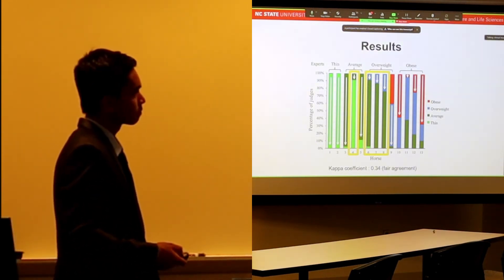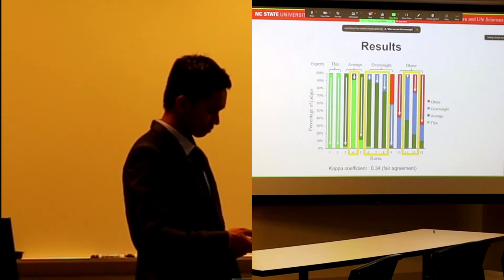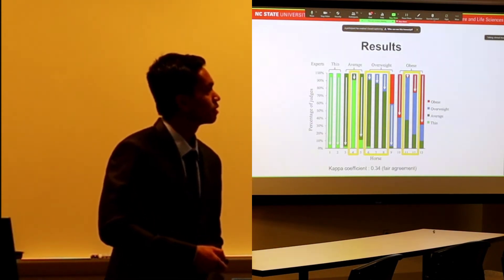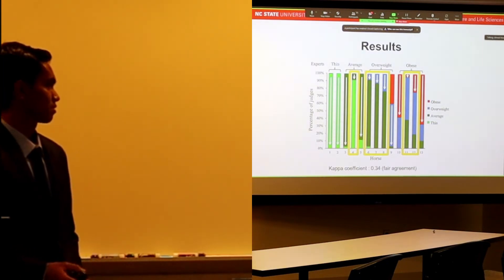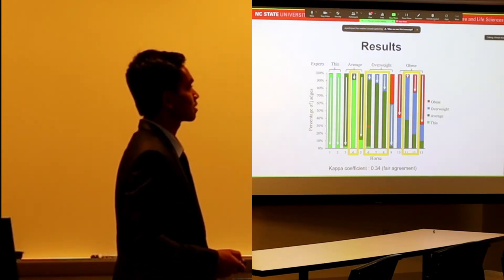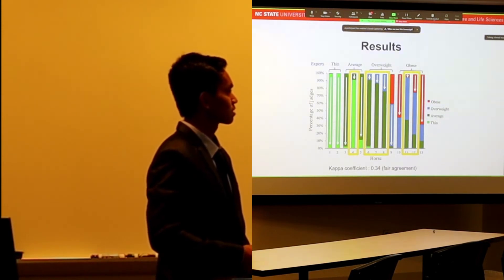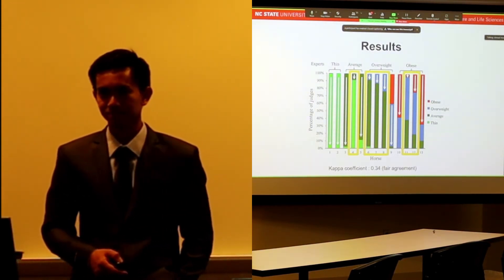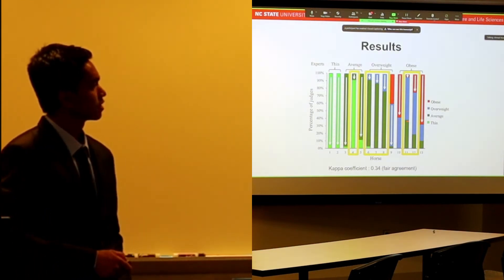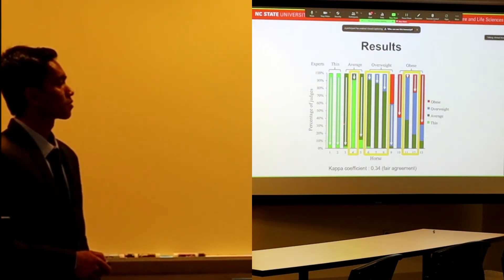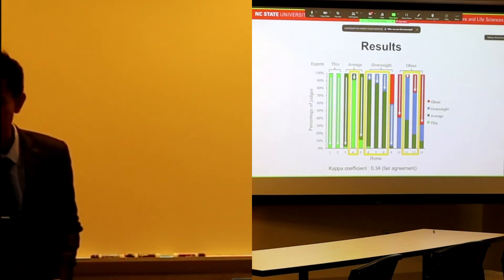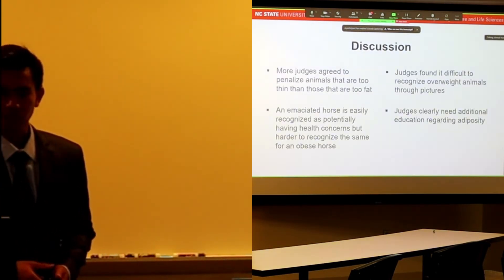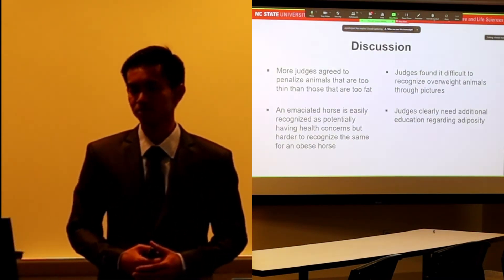With obese horses, two of them were underestimated by judges. Surprisingly, in one of the horses here, almost 40% of judges said the obese horse was ideal. So clearly, there is a problem about the way they see adiposity in horses.